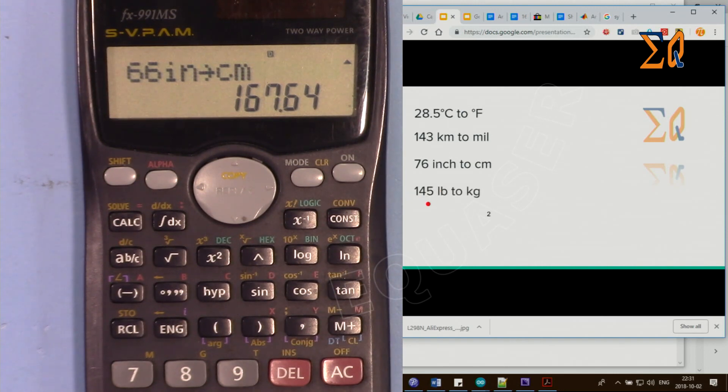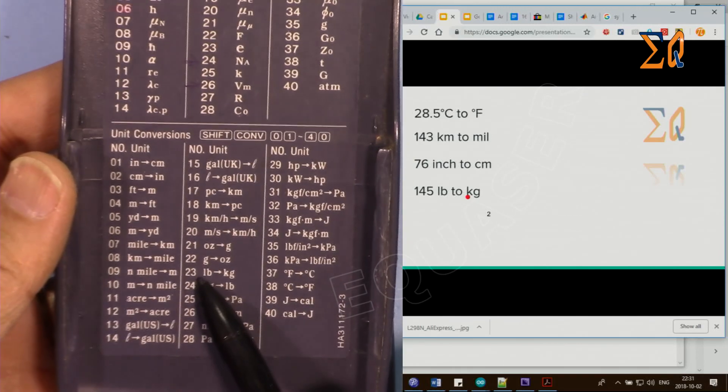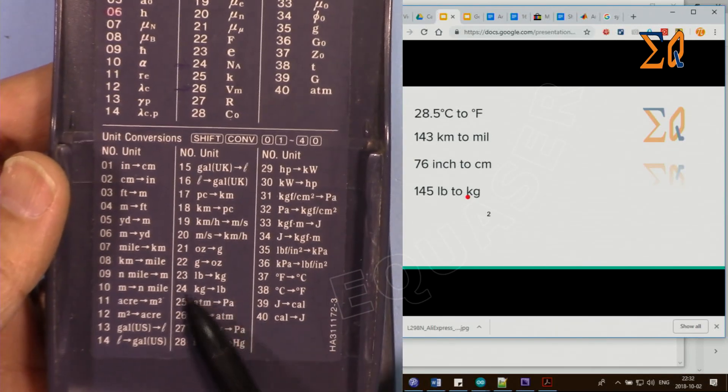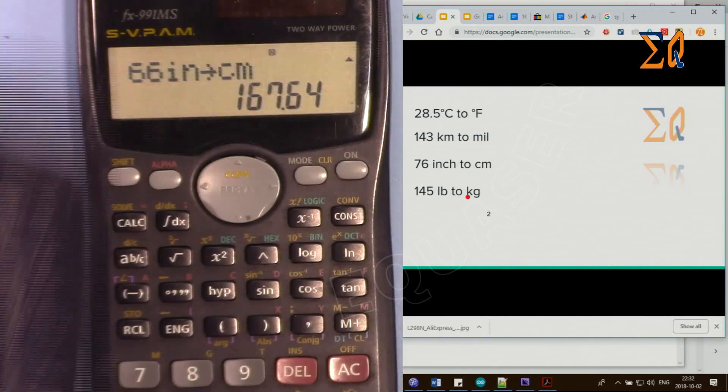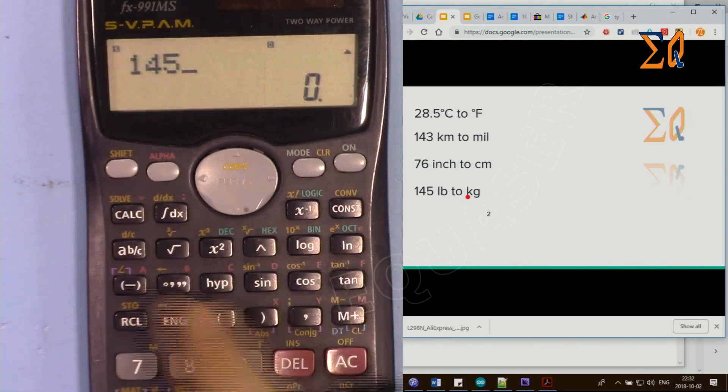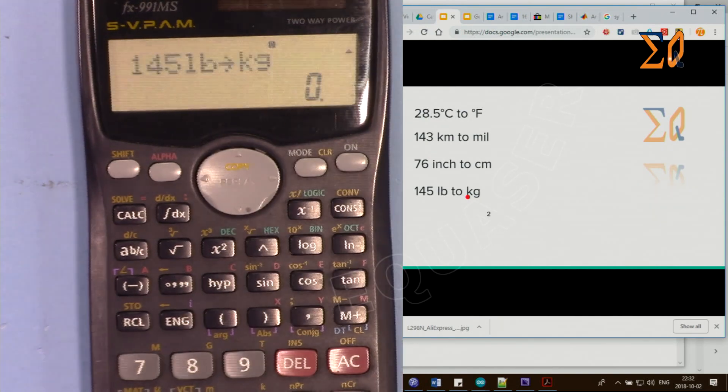Let's say you want to convert your weight, 145 pounds to kilograms. If you look here, 23 is for pound to kilogram, and 24 is kilogram to pounds. For our case, 23. So 145, shift, convert, and then 23, pound to kilogram, plus, equal. That's 65.77 kilograms.